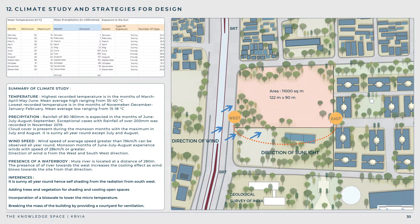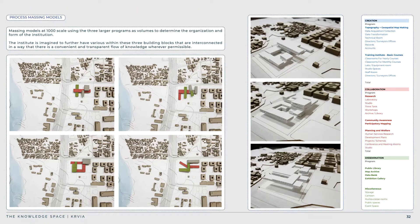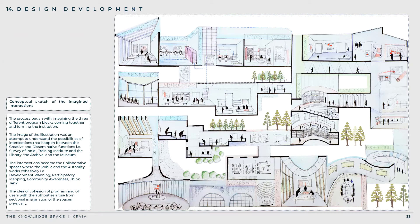Inferences from the climate study: since it is sunny all year round, self-shading from the sun in the southwest direction is recommended; incorporation of bioswales to lower micro temperatures; and breaking the mass of the building by providing courtyards for ventilation. The massing strategy arranges the creation block in gray and the dissemination block in green, so their intersection becomes the collaborative block shown in red. The blocks are positioned to create interactive and interlocking spaces at multiple levels, maximizing ventilation and minimizing heat. Different characteristic courtyards transition from public into private spaces.